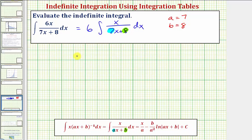The antiderivative is going to be six times x divided by A, that would be x over seven, and then we have minus B over A squared, that would be eight over seven squared, times natural log of the absolute value of the quantity Ax plus B, which is our denominator of seven x plus eight. And of course we have plus a constant of integration.